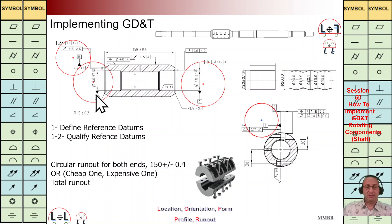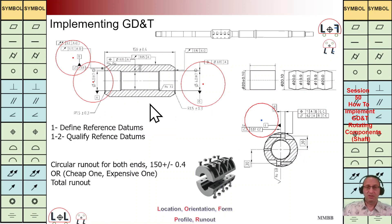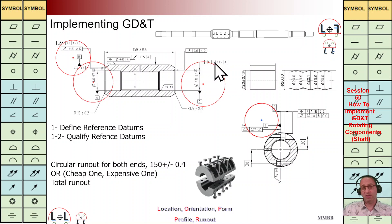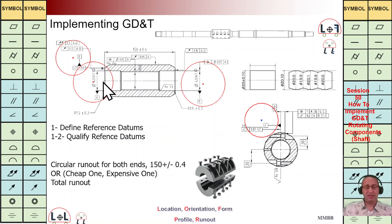We need to connect the right-hand side to the left-hand side, so we are going to use positioning to make coaxiality for this axis. We are going to connect reference axis D to A by using this positioning with the diameter symbol, where T is 0.05 with respect to A.